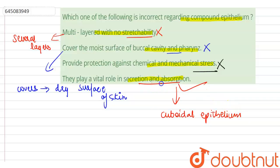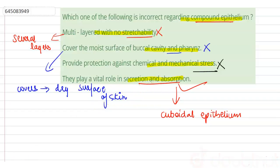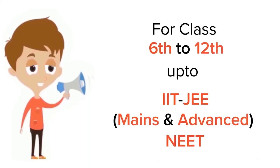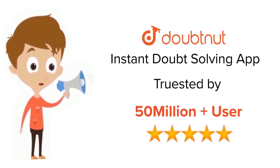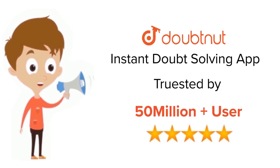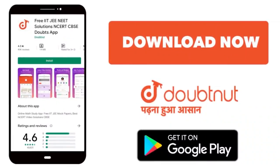It is the cuboidal epithelium which plays a vital role in secretion and absorption, so this statement is incorrect regarding compound epithelium. The correct option is: they play a vital role in secretion and absorption, as this statement is incorrect. Thank you. For class 6 to 12th, IIT JEE and NEET level, trusted by more than 5 crore students — download DoubtNet app today.